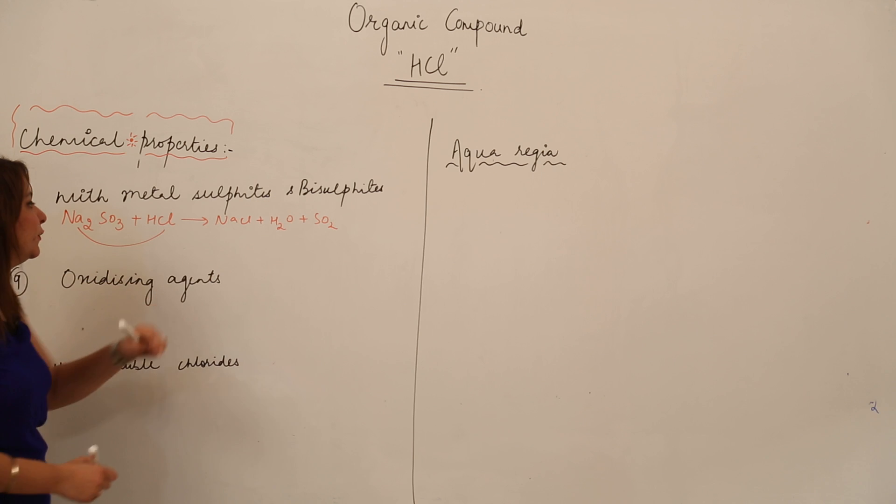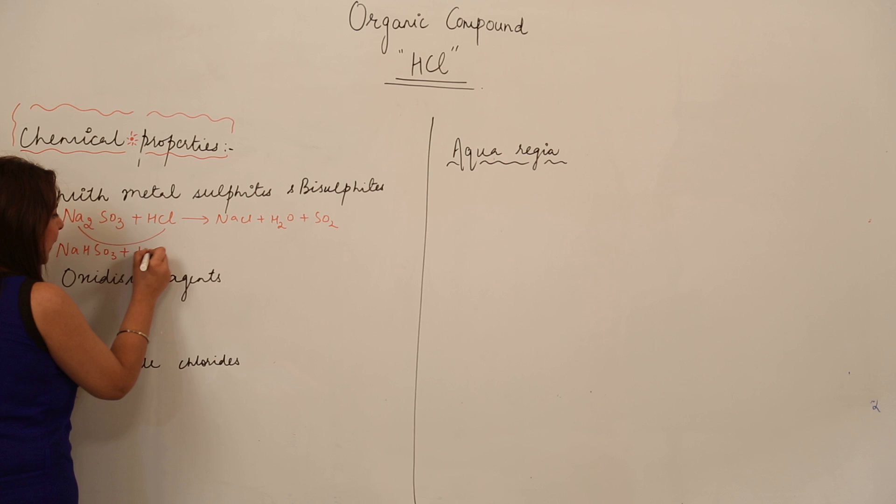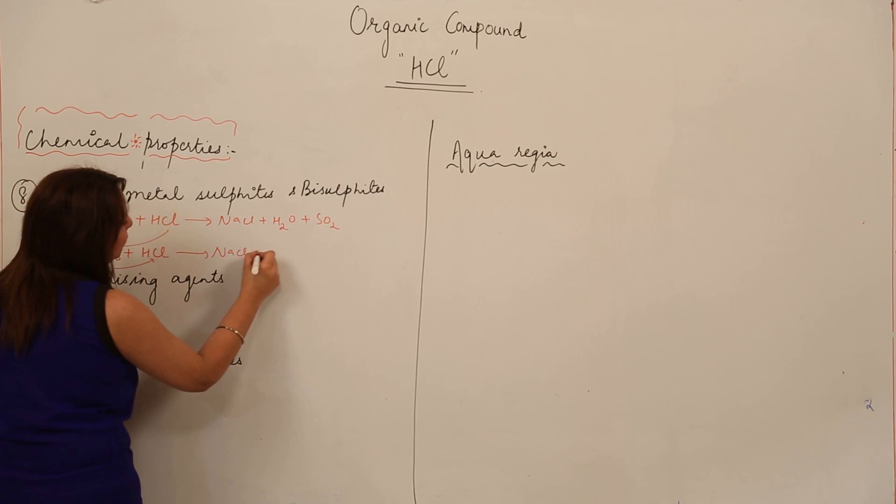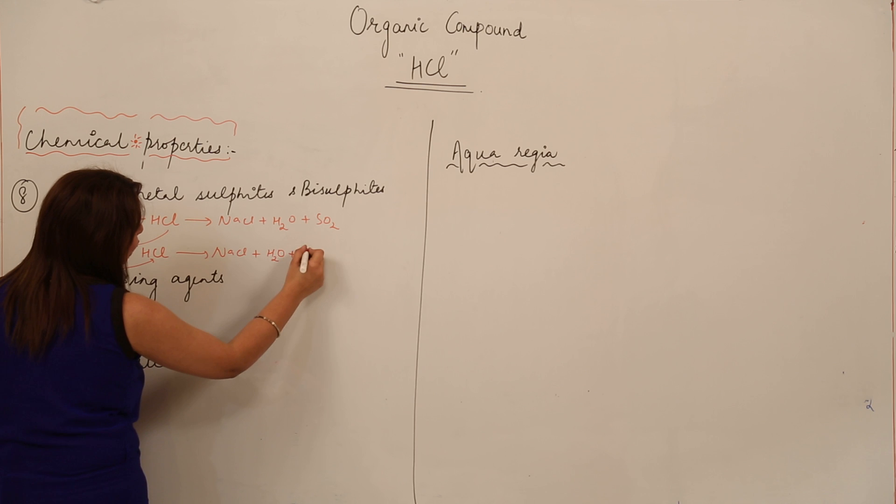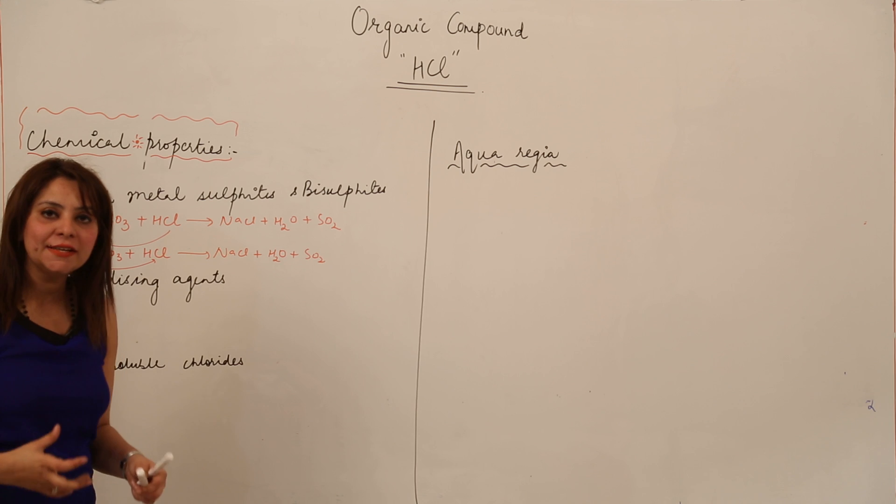Likewise, the same happens when we take bisulfite. Suppose I take sodium bisulfite and react with HCl. Again, I'm going to get the same products: NaCl, H2O, and SO2. This is how they react with metal sulfites and metal bisulfites.